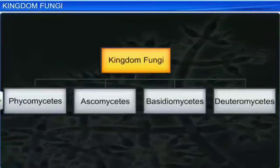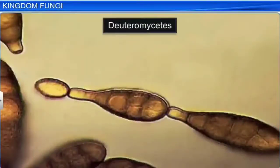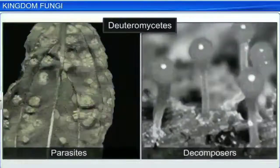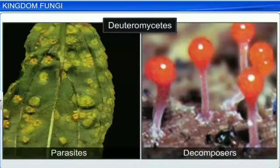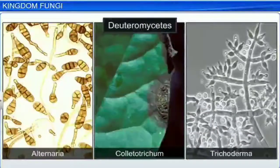The last class of fungi, Deuteromycetes, is known as imperfect fungi, because we do not know enough about their life cycles. Only their asexual or vegetative phases are known. Deuteromycetes reproduce only through asexual spores known as Conidia. They too have a septate and branched mycelium. They are saprophytes or parasites, while a large number of them are decomposers which help in mineral cycling. Alternaria, Colletotrichum, and Trichoderma are examples of Deuteromycetes.